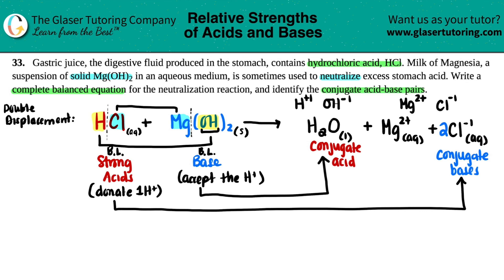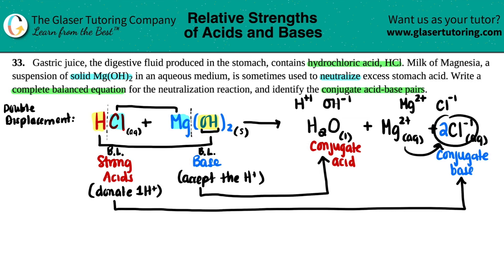So the conjugate acid is H₂O, because it was OH⁻ and it gained one hydrogen. Now you might ask: what's going on with the magnesium? Technically, the magnesium is still part of the chlorine in MgCl₂, so the whole MgCl₂ is the conjugate base if you want to leave it as that. But the key basic component out of the whole MgCl₂ is the chlorine.